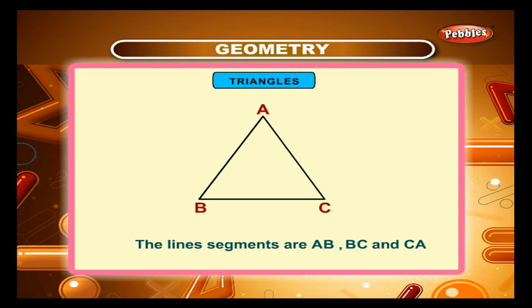The line segments are AB, BC and CA. The vertices are A, B and C. The angles are A, B and C. The triangle ABC is written as triangle ABC. This symbol stands for a triangle.